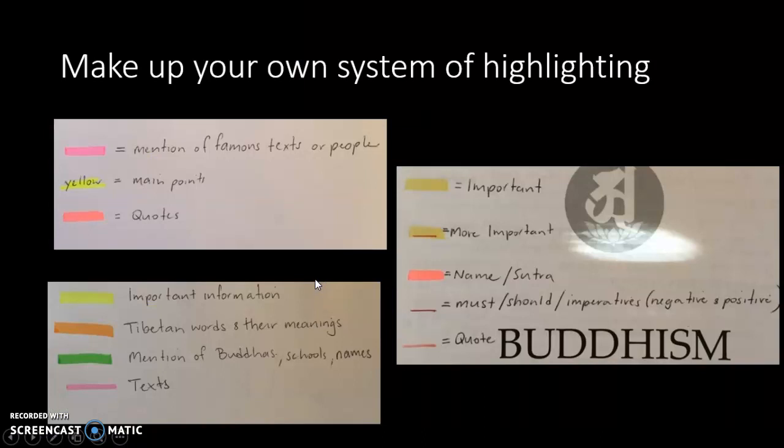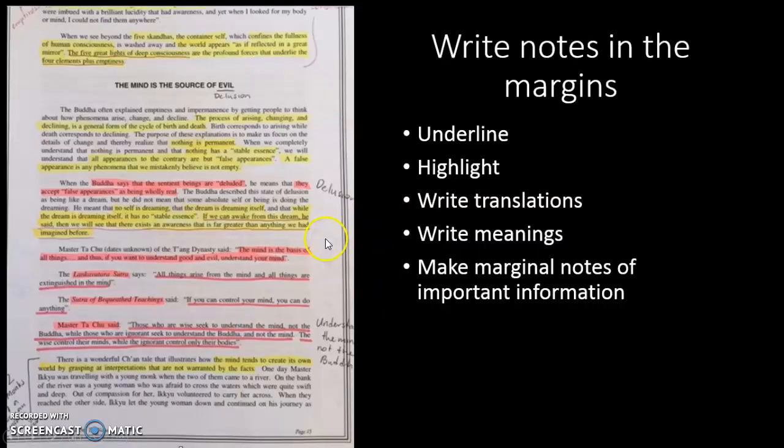You're going to make up your own system. These are three different systems of annotation that I used. Pay no attention to the actual topic, that's not important. I just want to give you an example of what annotation is. Here is an example where I've got marginal notes, different colors, and underlines as well. You can use underline, highlight, translations, meanings, and make marginal notes of important information.